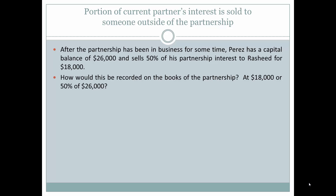Let's look at the sale of a portion of a current partner's interest to someone outside the partnership. A partner can be in financial difficulty or less interested in the partnership and sell a portion of their interest. For example, after the partnership has been in business for some time, Perez has a capital balance of $26,000 and wants to sell 50% of his partnership interest to Rashid for $18,000. Would this be recorded at $18,000 or at 50% of $26,000, which is $13,000?